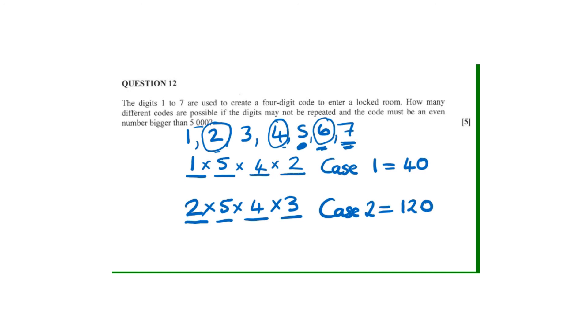Then for us now to get the total number of codes, the total is going to be equal to 40 plus 120, which is equal to 160. That becomes our final answer. Thank you so much, may God bless you.